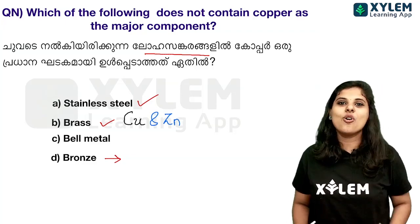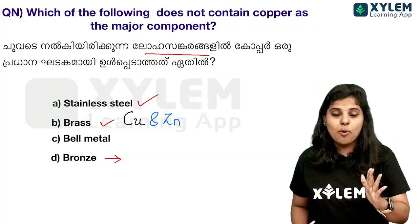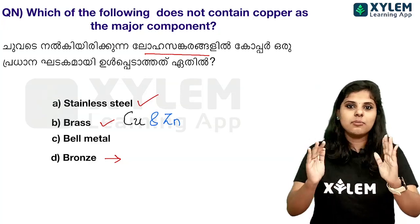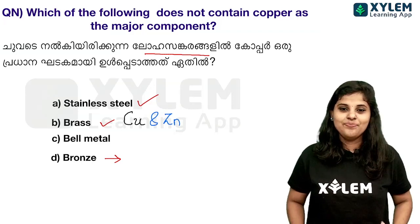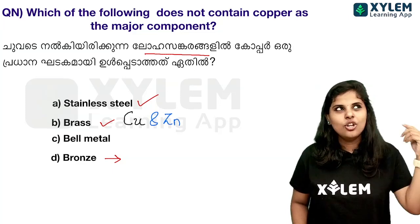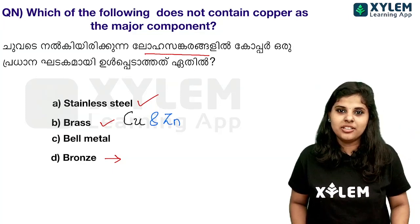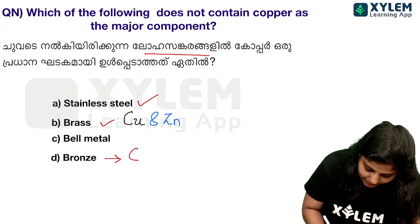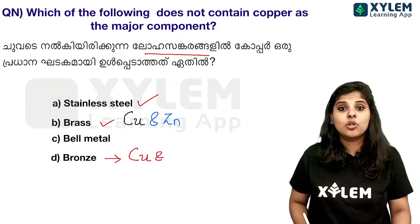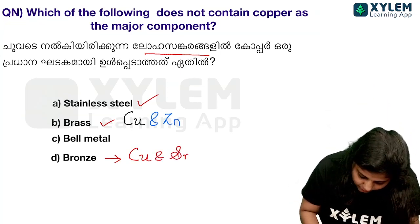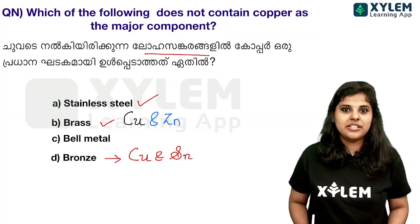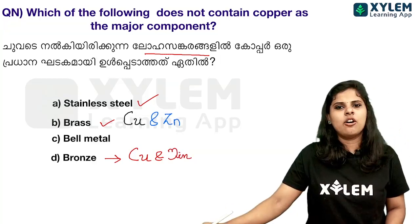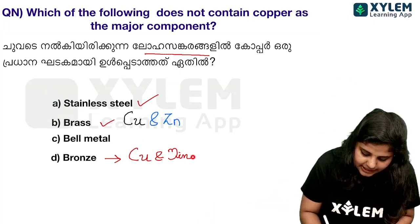Bronze is copper and tin. Brass is copper and zinc. Bell metal is also copper and zinc. So in brass, bell metal, and bronze, copper is always the major constituent, but stainless steel contains iron, chromium, nickel, and carbon — no copper.